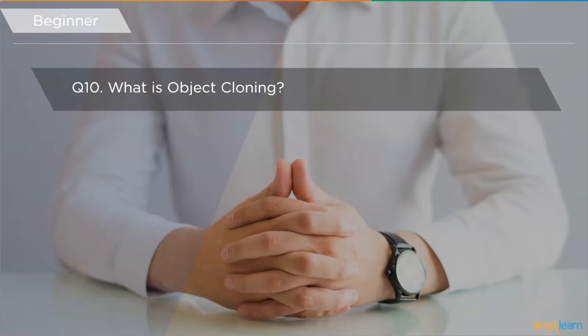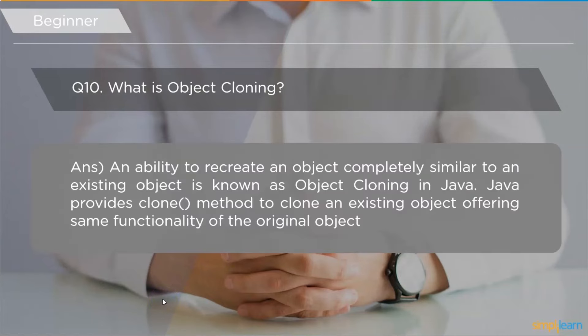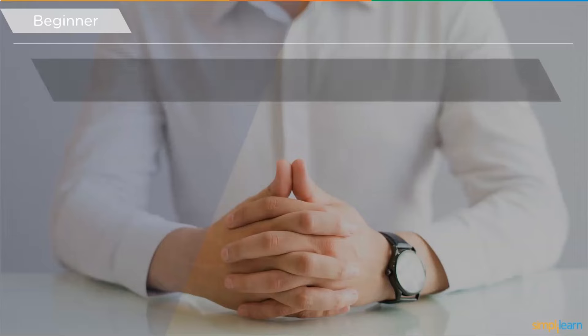The tenth question is: what is object cloning? Object cloning is the ability to recreate an object completely similar to an existing object. Java provides a built-in clone method to clone an existing object, offering the same functionality as the original object.